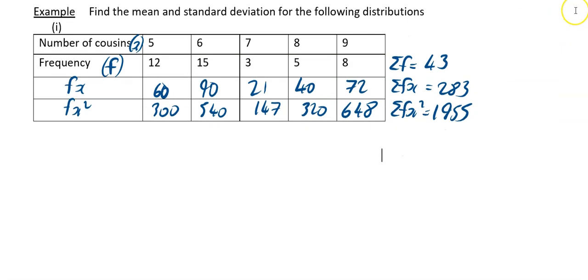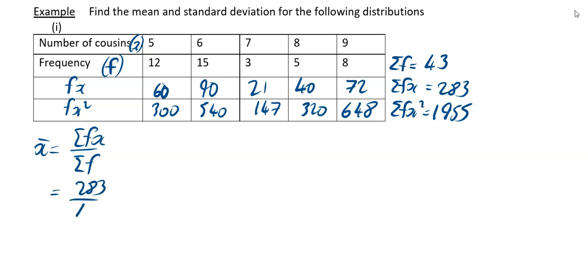I will find the mean first of all — the mean is the easier of the two. Write down the formula: sigma fx divided by sigma f. So your mean is 283 divided by 43. When I put that into my calculator, I got 6.58. This is number of cousins, so we'll say that's to two decimal places.